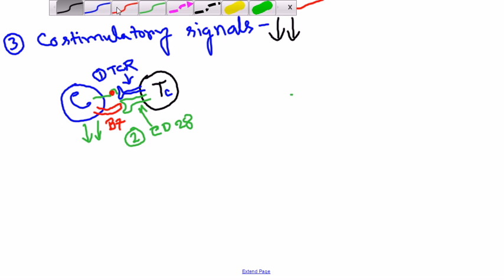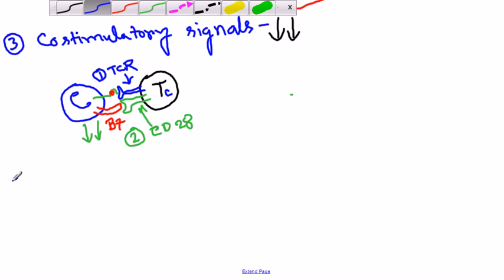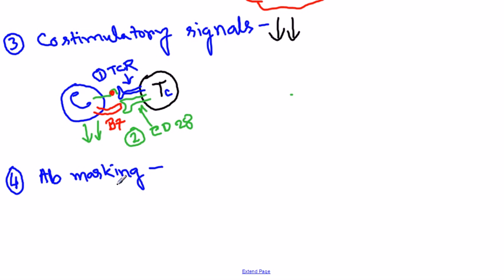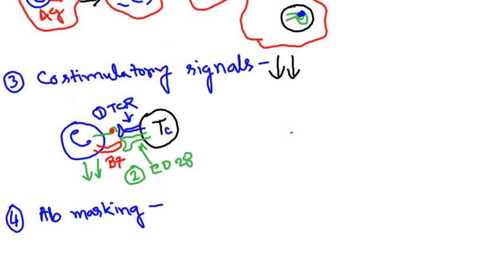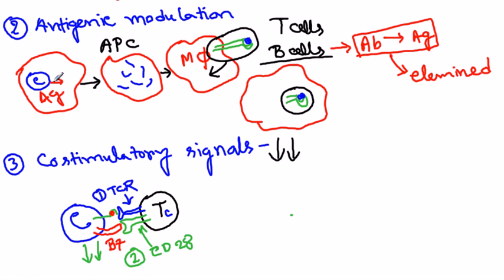The fourth and final strategy is called antibody masking, or AB masking. This again involves antigen presenting cells with MHC class 2. APCs such as macrophages, B cells, and dendritic cells can engulf cancer cells, chop them up, hold the fragments on MHC class 2 molecules, and show them to the rest of the immune cells.